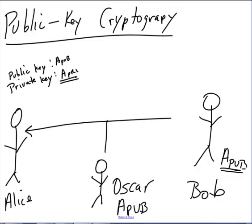GPG and PGP are both examples of this. This is the most mainstream form of cryptography we have today. However, it has a couple of problems. The first is that Oscar can also encrypt a message and send it to Alice, which leads into what we call the authentication problem. Alice knows that when she decrypts a message it was intended for her, but she doesn't know if it came from Bob or from Oscar — there's no way to confirm it was a legitimate message.